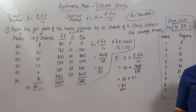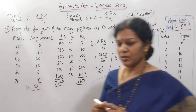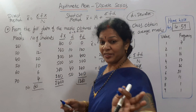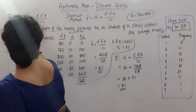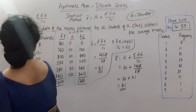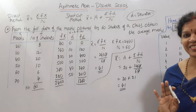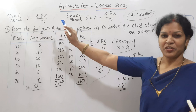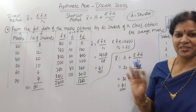That is it — this is discrete series. We can show everything in a table as well, which looks neat. The key point is: only the formulas you have to remember. First method: ΣFX / N. Second method: A + ΣFD / N. That is it. Is it clear?